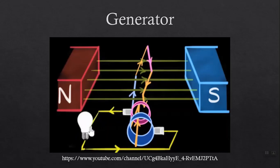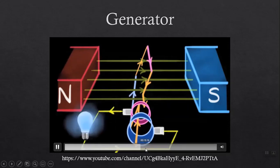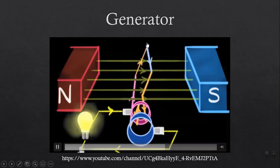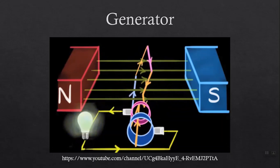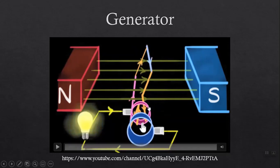You can observe how the direction of the current reverses at either side of the wire as it rotates — blue was carrying current in, now it carries current out. Because the coil is connected to slip rings, the generated current is an alternating current.